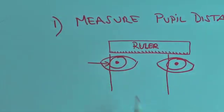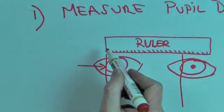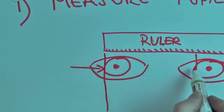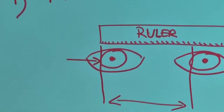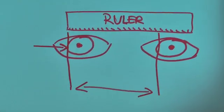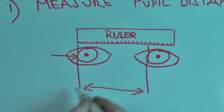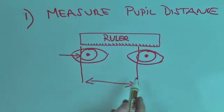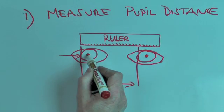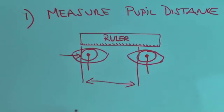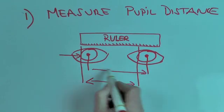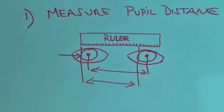So we need to measure, using the ruler, the outside of this iris to the inside of this iris. That distance is called the pupil distance. That is the same as the distance between the pupil, which is the dark hole that we see. These two measurements are identical.